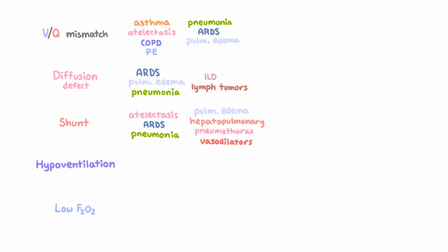For hypoventilation, the causes are a little different. We talked about them, but they include impaired central nervous system function, either from drugs such as opioids or sedatives or a stroke, anatomic thoracic defects like kyphoscoliosis and flail chest, and then also just pain.